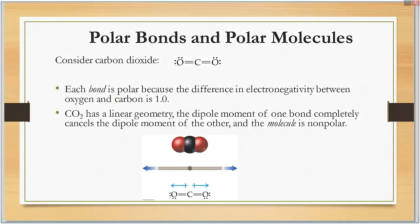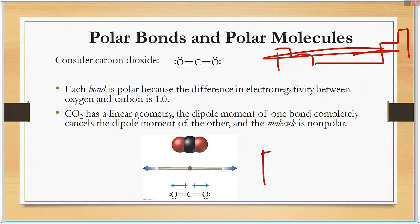Let's take a look at carbon dioxide. If we find this on the periodic table, carbon and oxygen, here's oxygen, here's carbon. Oxygen is closer to fluorine than carbon is. Oxygen is more electronegative, so the electrons are going to drift towards those oxygens. Each bond is polar because the electronegativity difference between oxygen and carbon is 1.0.